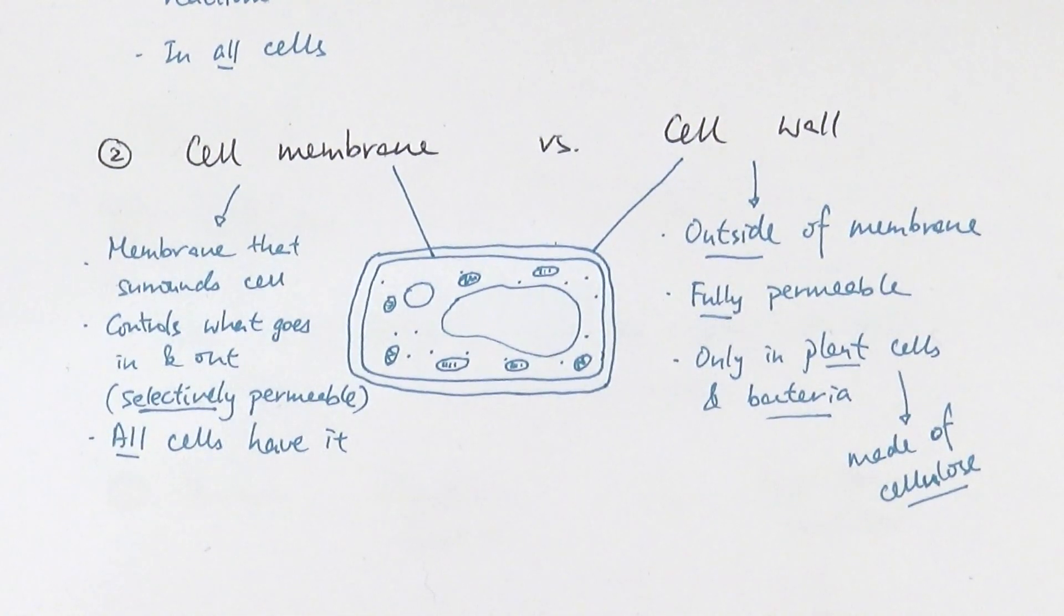A second mistake that people often make is mixing up cell membrane and cell wall or not knowing where they're actually found in a cell. I mentioned earlier that one of the crucial things that make up a cell is cytoplasm, and cell membrane is another one. Every single cell would have a cell membrane because that's what contains the cytoplasm and all of the other organelles inside a cell.